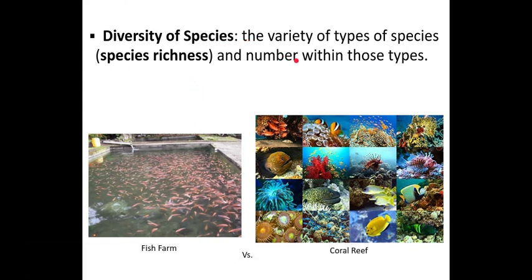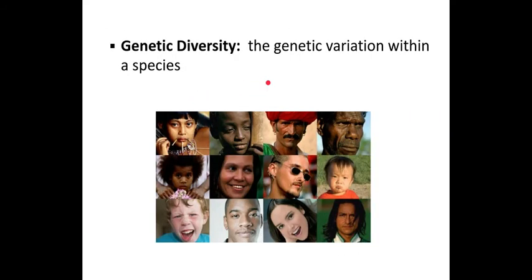Within a habitat, we look at species diversity — a large variety and large number of different types of species, described as being 'species rich.' A coral reef is one of the most diverse ecosystems in the world, with many different species. A fish farm, by contrast, would contain just one species. The species diversity of an artificial ecosystem is much less than that of a natural ecosystem.